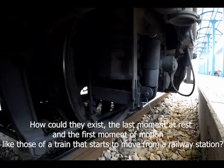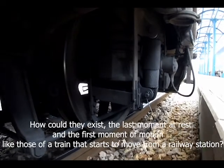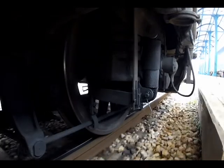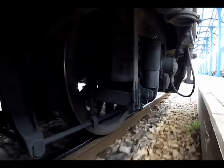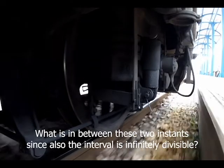How could they exist, the last moment at rest and the first moment of motion, like those of a train that starts to move from a railway station? What is in between these two instants, since also the interval is infinitely divisible?